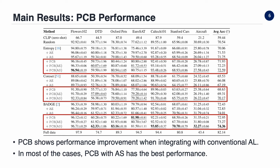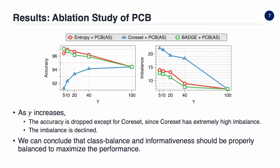In our empirical validation, the proposed method demonstrated performance improvements when integrated with conventional active learning across various datasets. Furthermore, in most cases, PCB with AS showed greater performance gains compared to PCB with AE. To validate the importance of informativeness and class balance, we conducted further experiments. As we increase gamma, queries can contain non-informative examples with higher probability. The graph shows that both accuracy and class balance decrease as gamma increases, except for core set. Since core set has a much higher imbalance value compared to other baselines, it experiences a performance improvement when focusing more on class balance. Therefore, we can conclude that class balance and informativeness should be properly balanced to maximize performance.